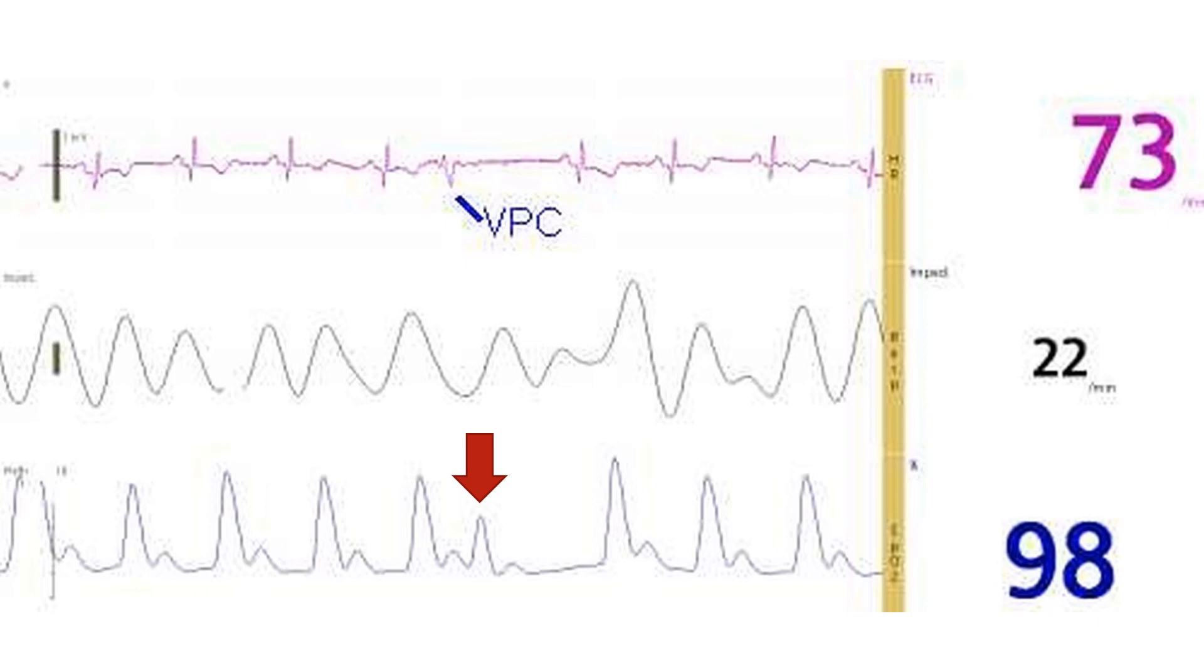Since ventricular premature beats VPC or PVC or VPB occur earlier than the expected sinus beat, there is less diastolic time for filling of the ventricle after the previous sinus beat. This, in addition to the absence of atrial help to ventricular filling,